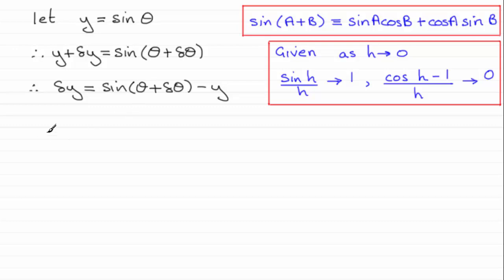And the next stage is to work with the identity up here. I'm going to expand the sine of theta plus delta theta replacing the a with theta and the b with delta theta. So you should be familiar with that identity and that will give us the sine then of theta cosine of delta theta plus the cosine then of theta sine delta theta. And then we've got the minus y here. But I'm going to replace that y then with sine theta so we have minus sine of theta.